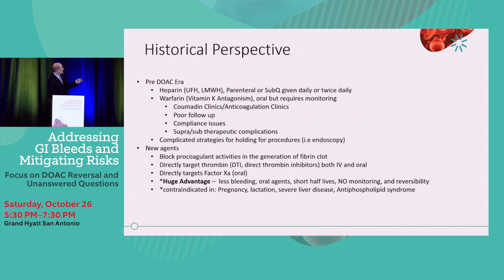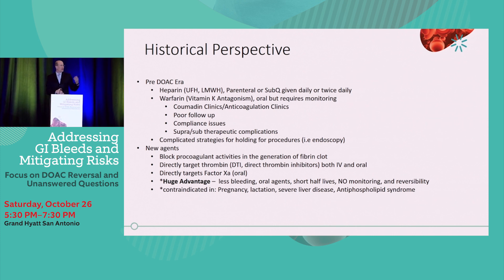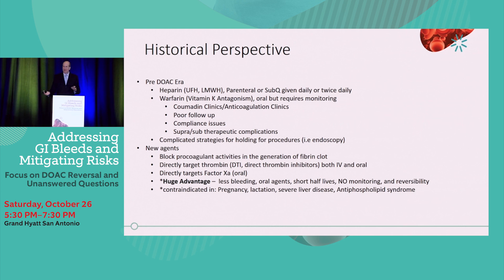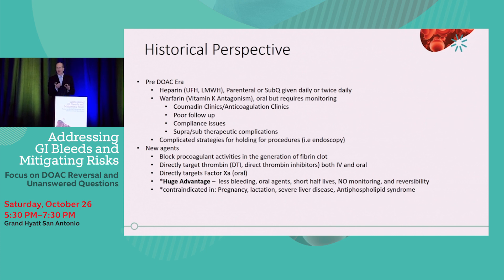That's the problem with coumadin: coumadin clinics, poor follow-up by patients, compliance issues. The biggest issue is that patients are either super-therapeutic — an INR of 10 — or sub-therapeutic, with an INR of 1. If you're on coumadin and have an INR of 1, you aren't doing any good. If you're on coumadin and have an INR of 10, you're in the ER with a GI bleed or something worse. The therapeutic window is so narrow with warfarin that it's a real problem, which made the introduction of these drugs so incredibly useful.